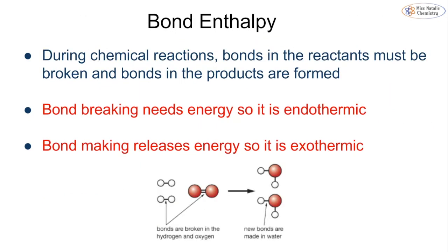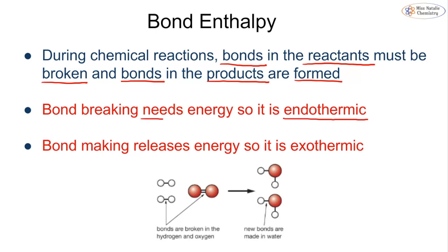We can use what we know about exothermic and endothermic reactions to understand bond enthalpy. During a chemical reaction, we are breaking bonds in our reactants and forming bonds in our products. From conservation of mass, we must have the same number of atoms on both sides — just put together differently. Overall, bond breaking is an endothermic process: we need to put energy in to break a bond, giving a positive value. Bond making, on the other hand, is exothermic because it involves a release of energy.